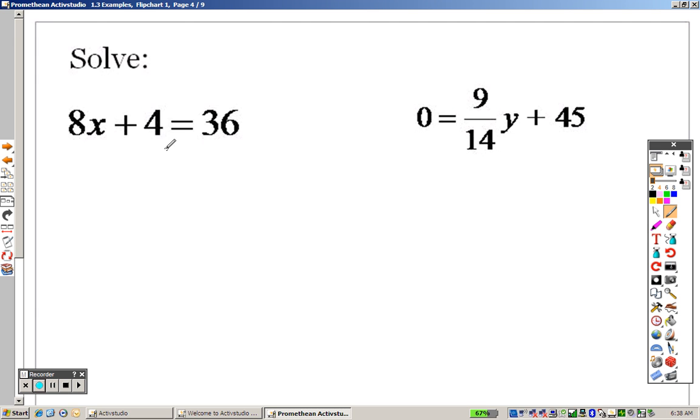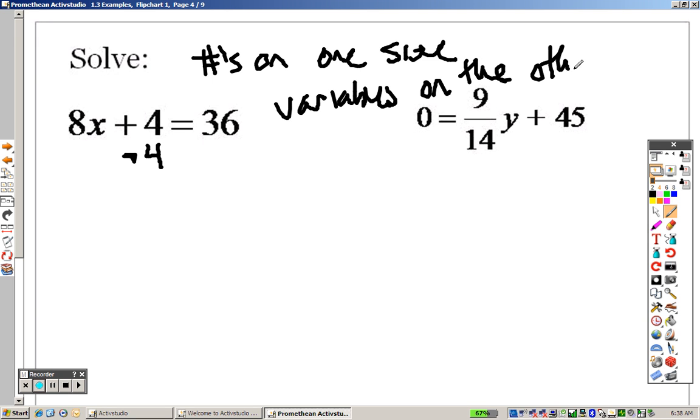Alright, taking a look over here now. Same as the last one. This is addition, so it's subtraction. You want to get the numbers all on one side, right? Numbers on one side, variables on the other. That's what you want to do. That's why I'm moving this over. It's addition, so I'm going to subtract it. That's why I'm doing this.